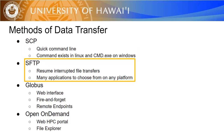The second method is SFTP, secure file transfer protocol. This method is slightly slower than SCP, but allows for resuming interrupted data transfers. SFTP can also be used on the command line, but there are many graphical SFTP clients to choose from on any operating system.